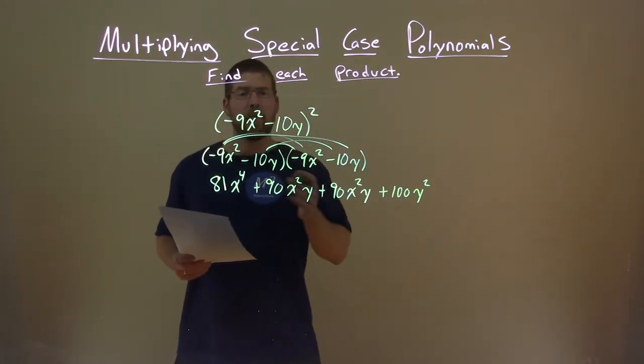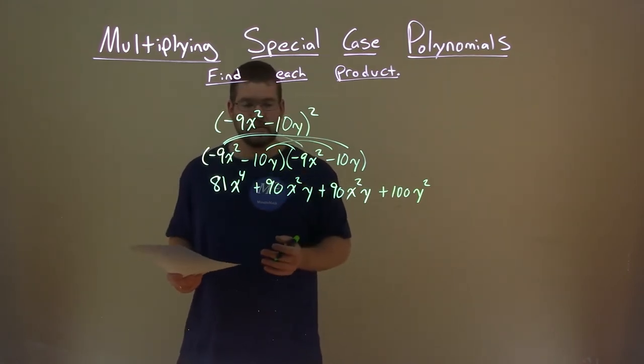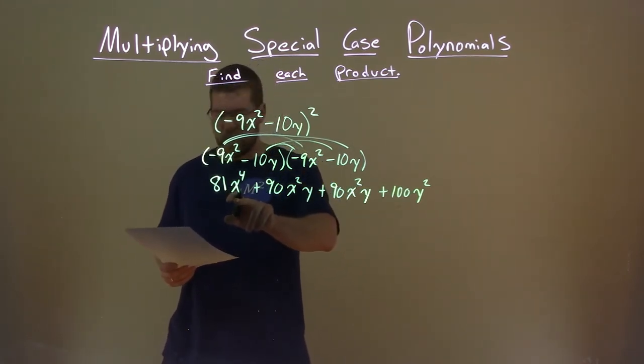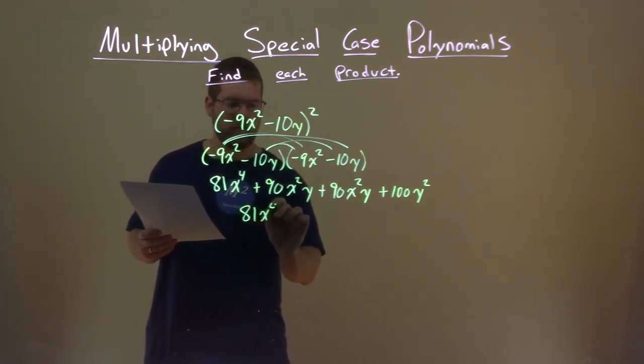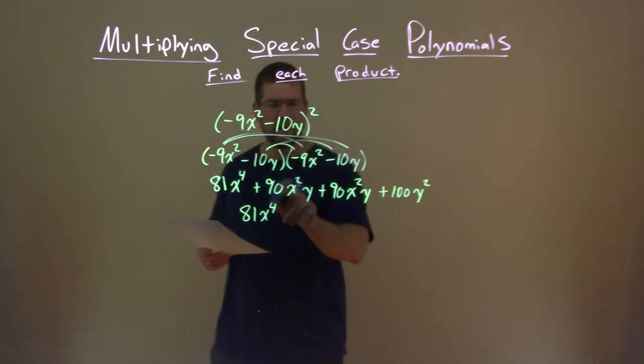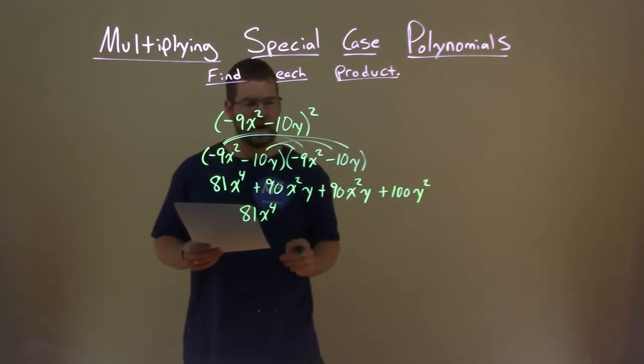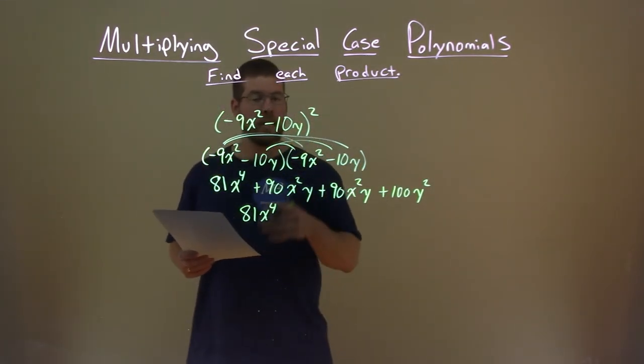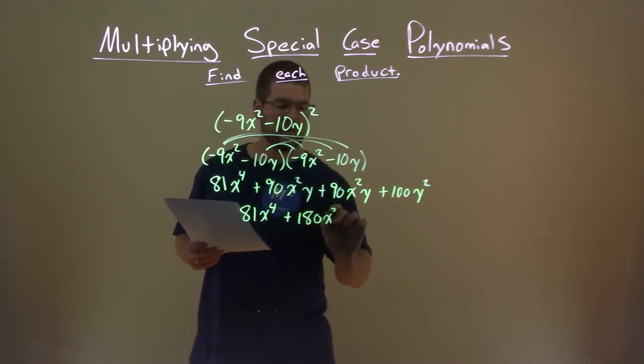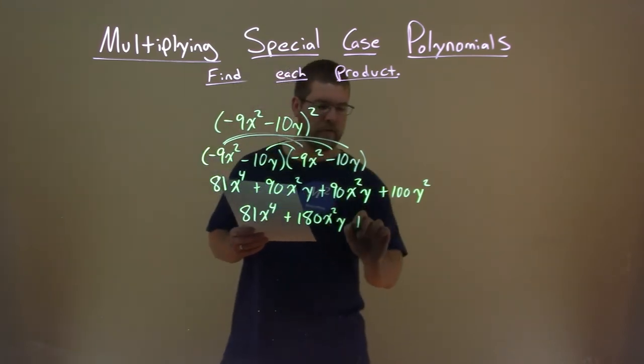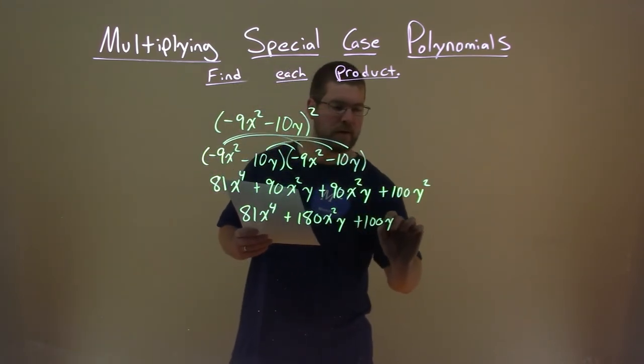Alright, so now we need to simplify, combine our like terms. Well, there's nothing that's x to the fourth power, so I'm just going to leave that down and bring it here. 81x to the fourth power. But the inside, we have 90x squared y plus 90x squared y. They are like terms. We add the 90s. 90 plus 90 is 180. And we have x squared y here. We bring down the 100y squared.